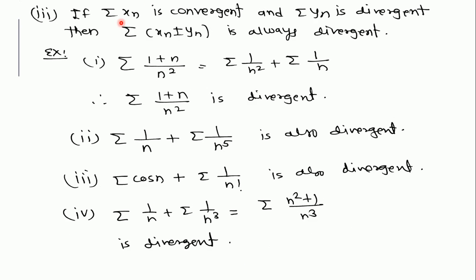See another note: if series X_N is convergent and series Y_N is divergent, then the addition and subtraction of these two series is always divergent. See example: if we have the series summation of (1 + N) / N², this can be written as 1/N² plus 1/N. The first is convergent (P-series, P > 1) and the second is divergent (P-series, P = 1). Therefore this is the sum of a convergent and a divergent series, and therefore it is a divergent series.